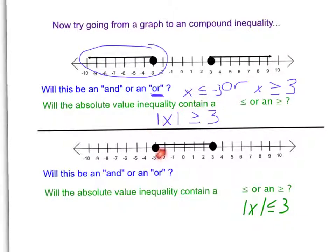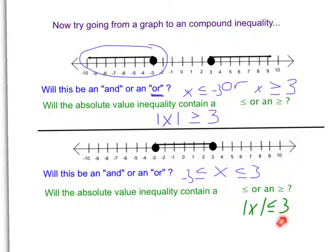Second example. We know this is going to be an and compound inequality because they're connected, so we know that x is going to be between two numbers. It equals those numbers as well, so we're going to use the less than or equal to, and it's between negative 3 and 3. These are opposites, so I know that the number is going to be the positive 3. It's an and, so my absolute value inequality is going to be a less than or equal to, and I take whatever is in between and drop it in the absolute value symbols.